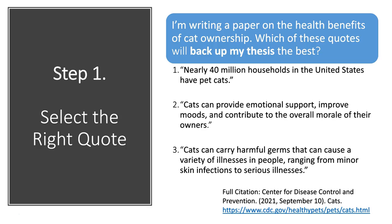I'm writing a paper on the health benefits of cat ownership. Which of these quotes will back up my thesis the best? Number 1: Nearly 40 million households in the United States have pet cats. Number 2: Cats can provide emotional support, improve moods, and contribute to the overall morale of their owners. Number 3: Cats can carry harmful germs that can cause a variety of illnesses in people, ranging from minor skin infections to serious illnesses. So which of these three quotes backs up my thesis the best?